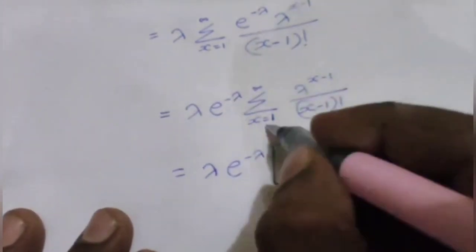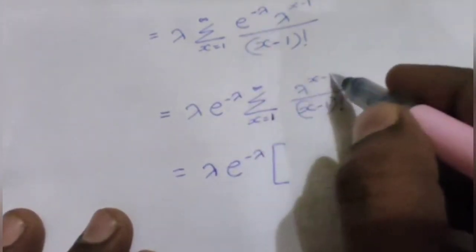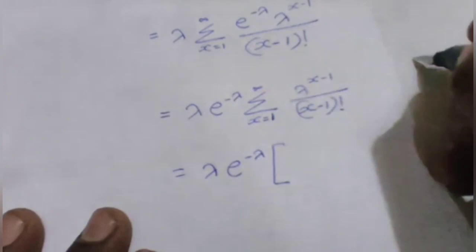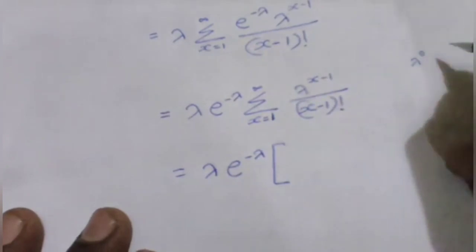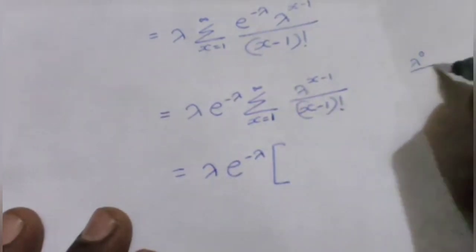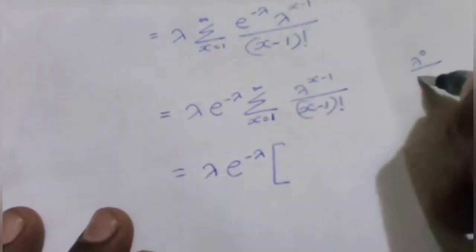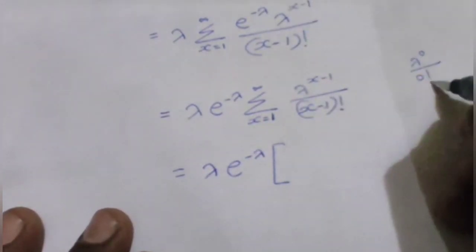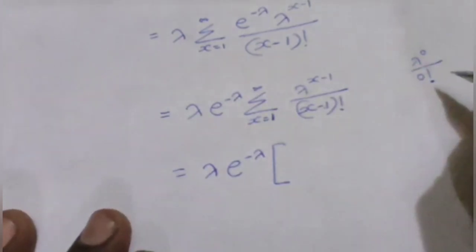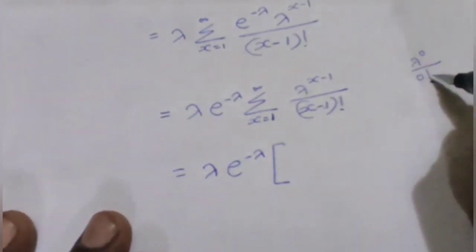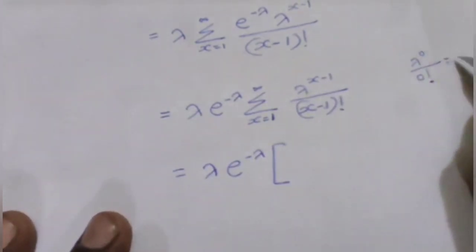Substituting: when x equals 1, x minus 1 is 0, so lambda to the power 0 equals 1 and 0 factorial equals 1. The sum gives 1 plus lambda plus lambda squared over 2 factorial plus ... which is the expansion of e to the power lambda.